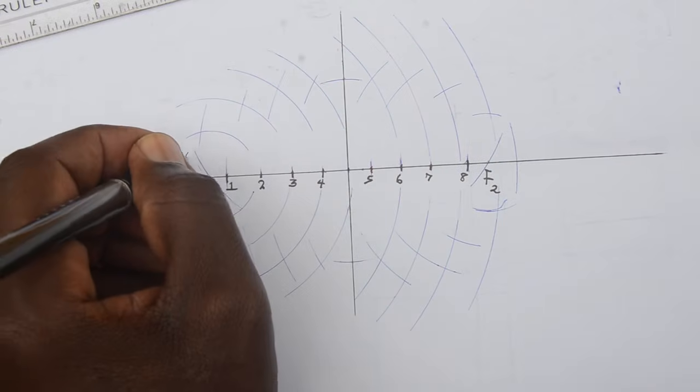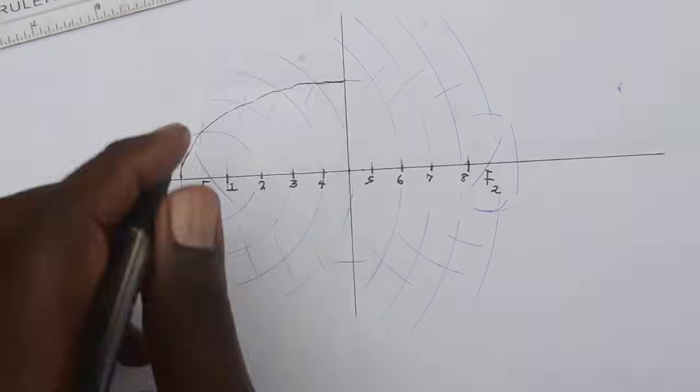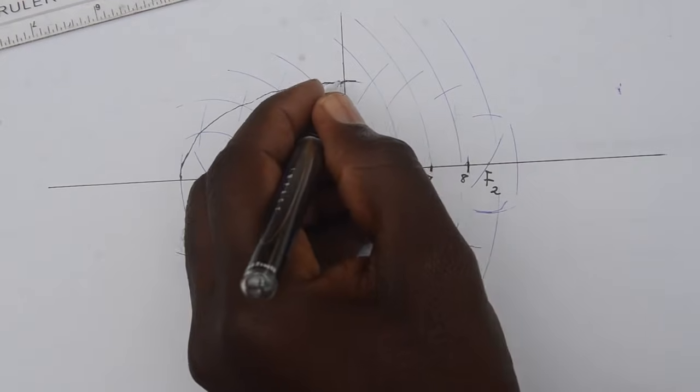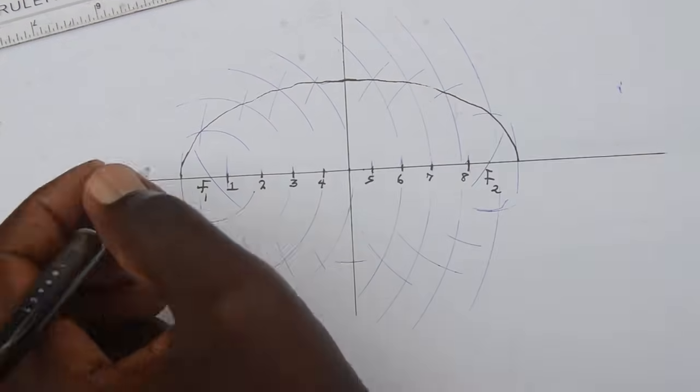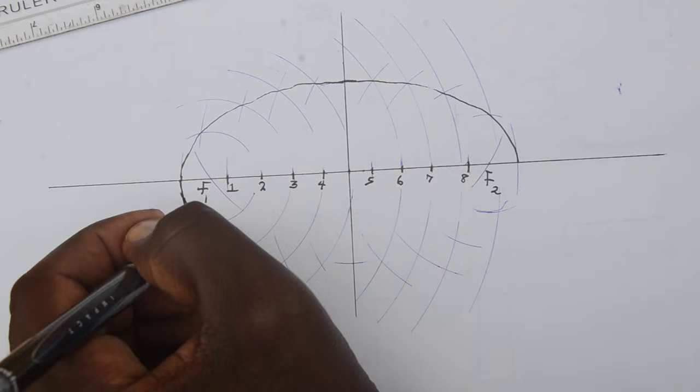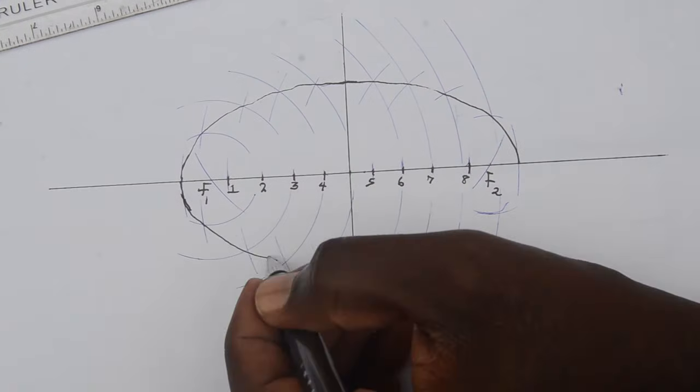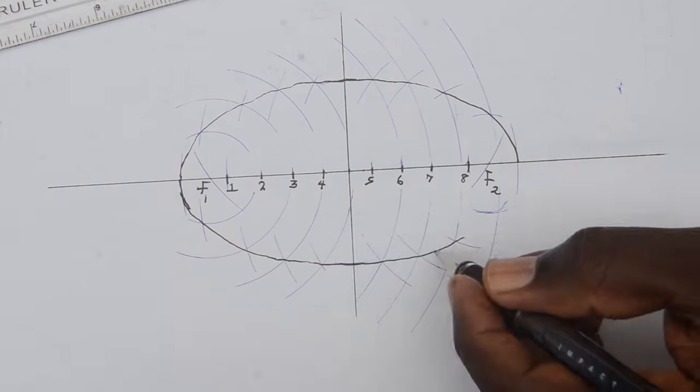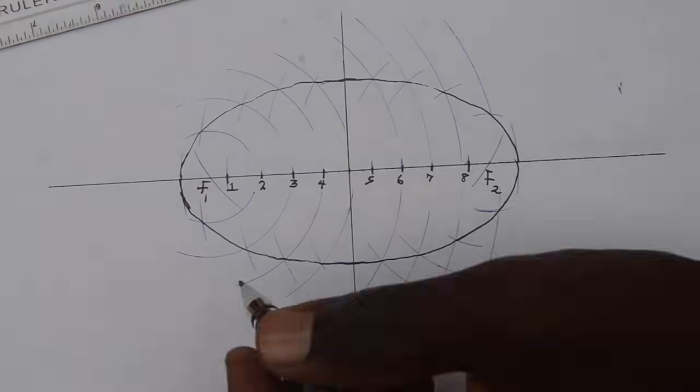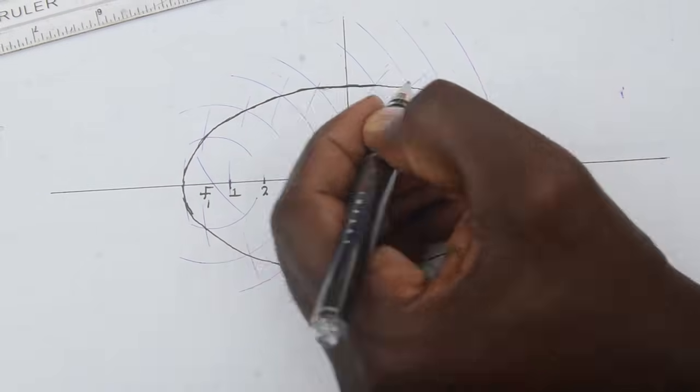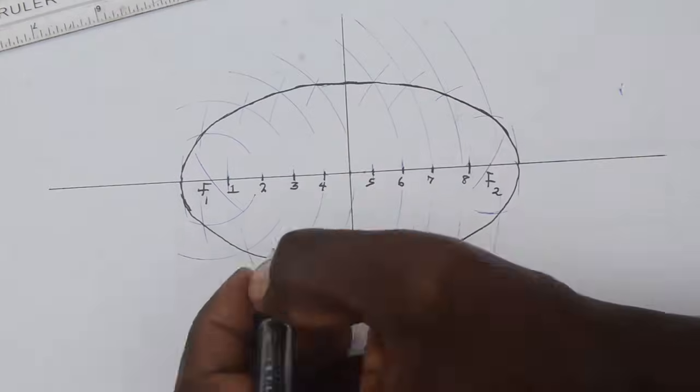After you have marked off all the points using freehand, you join them to get the ellipse. And that's how you construct an ellipse using the foci method. Thanks for watching.